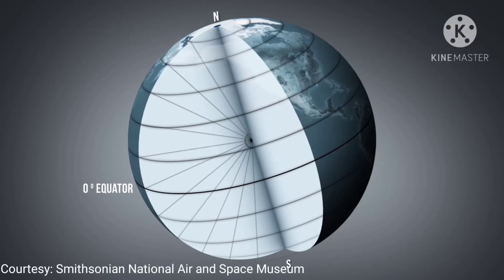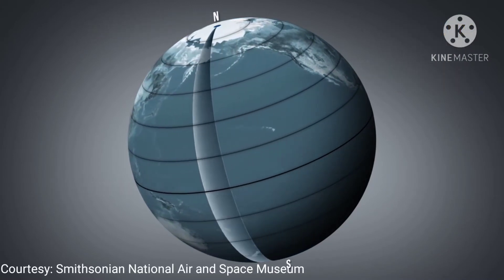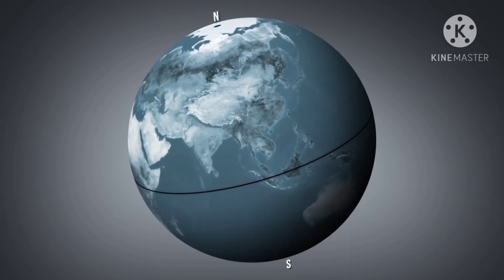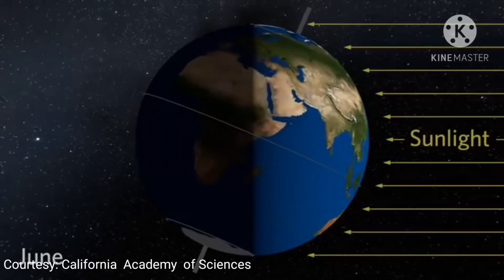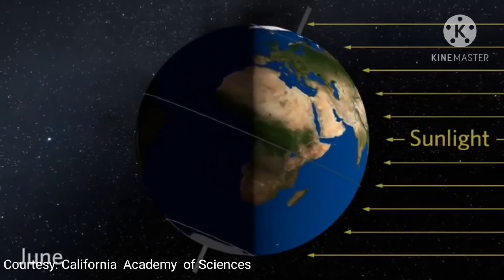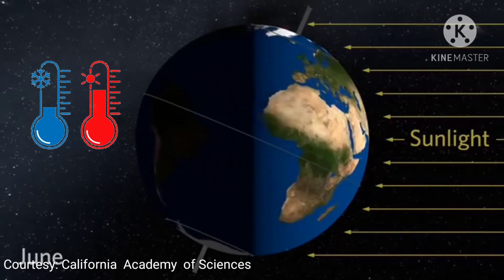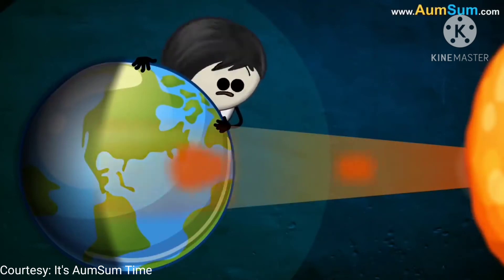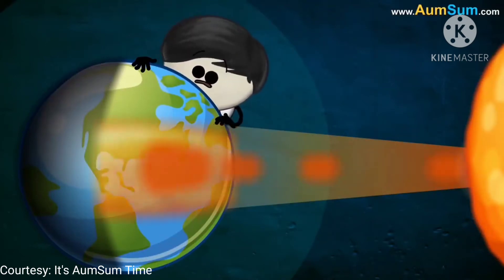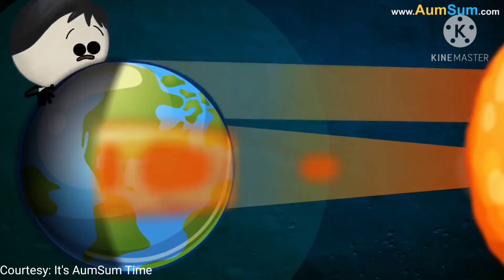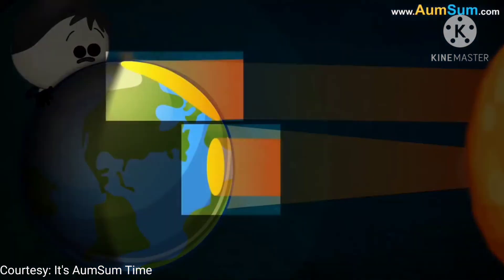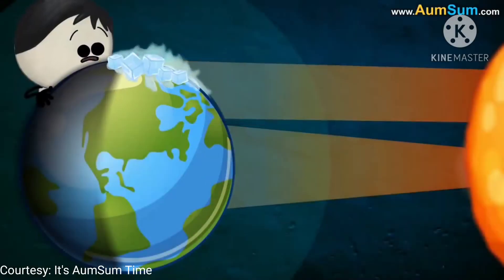An area's latitude on the surface of the Earth also affects the weather, because it changes the intensity of the sun's light that the area receives. This has a direct effect on the temperature. If you're at the equator, the sun is always high in the sky, and that concentrates the sun's rays making it hotter. Whereas at the North Pole and South Pole, the sun is always low in the sky, and this causes the sun's rays to be spread out and diluted.